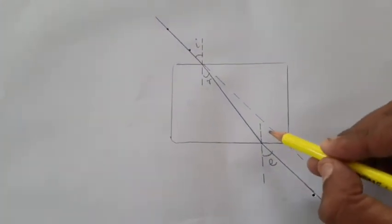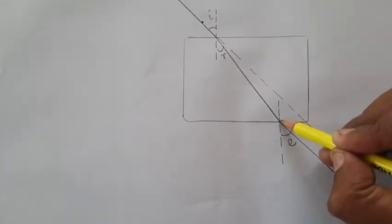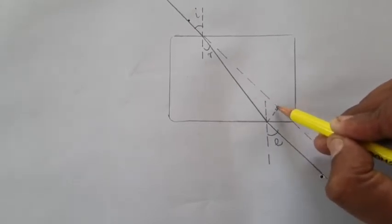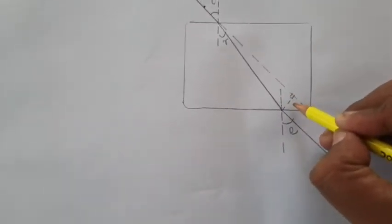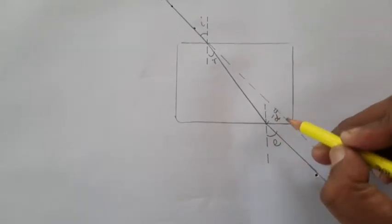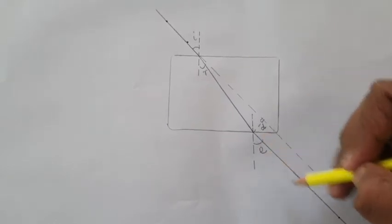So now this is the normal as you can see and from here I am drawing a perpendicular so as to show the lateral displacement. The perpendicular shift of the emergent ray from the original path of the incident ray we are marking it with D.